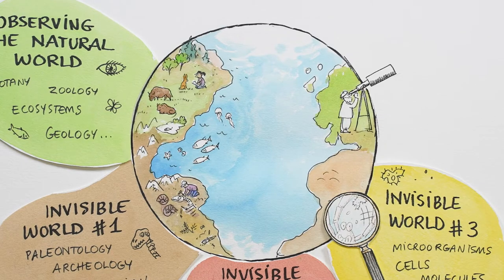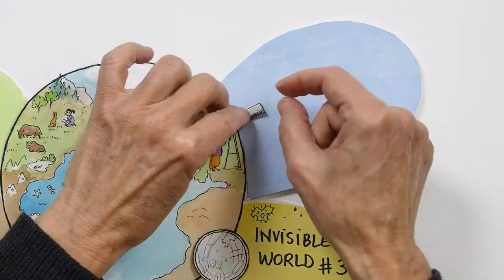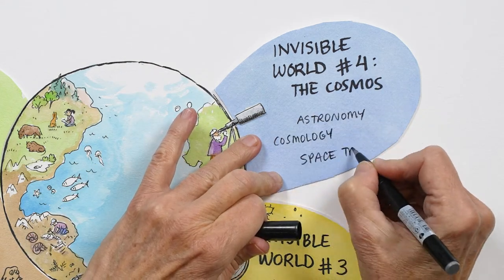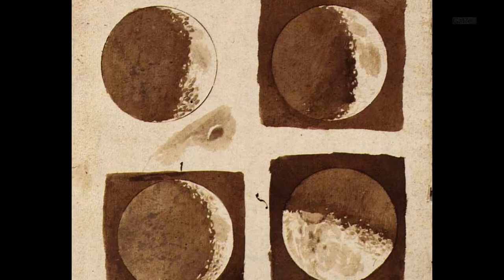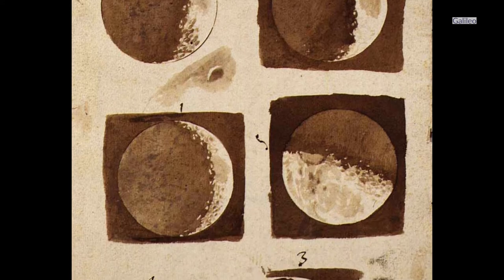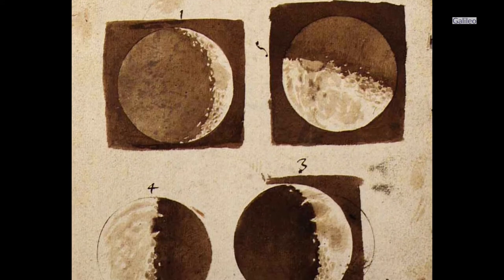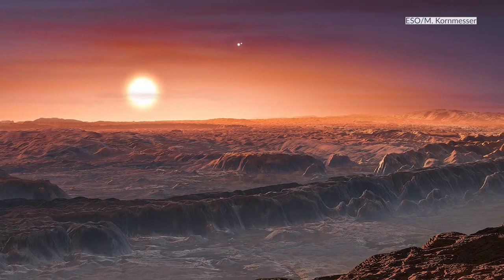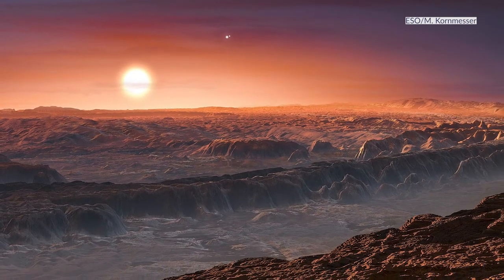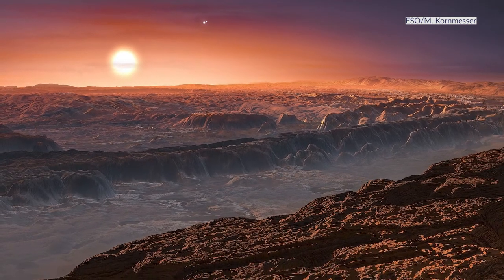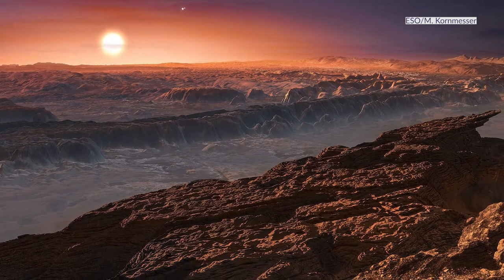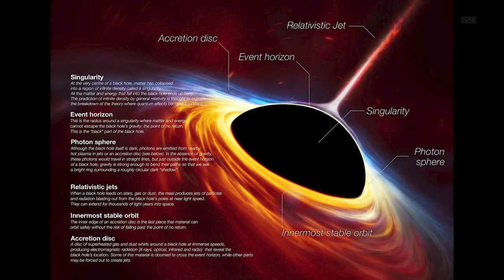At the other end of the spectrum, when Galileo invented the telescope at the beginning of the 17th century, suddenly distant objects became visible. This is our invisible world number four: the cosmos. Galileo himself did beautiful drawings of the moon. But what about worlds many light years away? The artist has to work with astronomers and add imagination to create scenes like this view from the surface of the planet Proxima Centauri B, or this illustration of a black hole with lots of information.